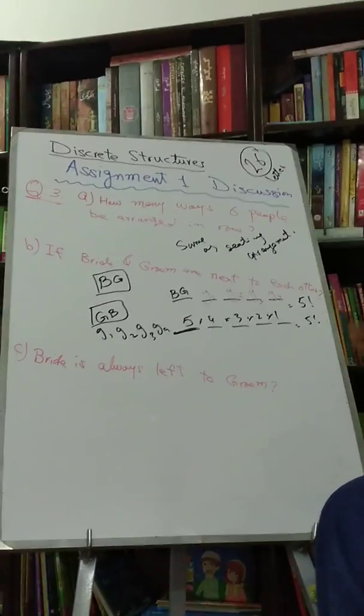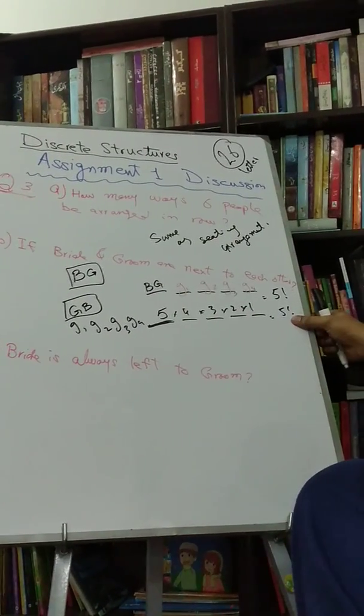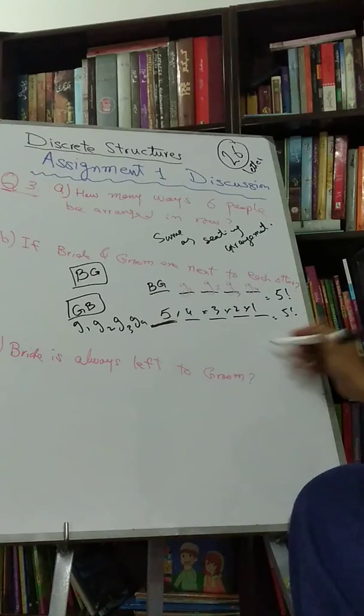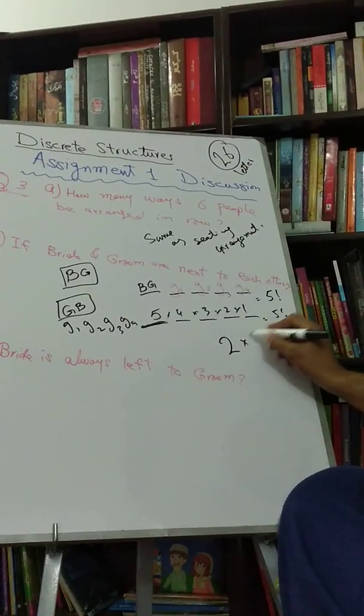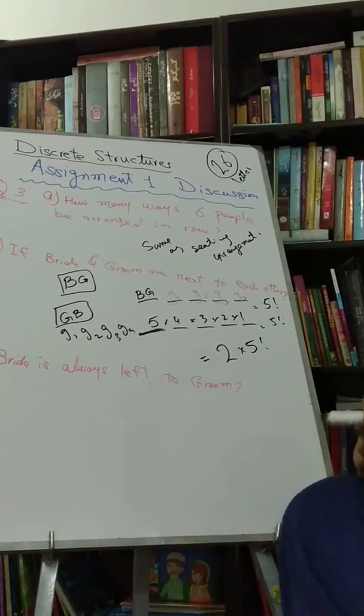So we have, again, five factorial. So five factorial were before when bride and groom are there. Five factorial next when groom and bride are there. So total answer is two times five factorial. Five factorial plus five factorial are two times five factorial.